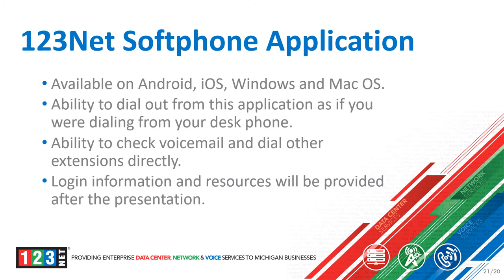123Net has a soft phone application you can download on your cell phone or computer. It's available on Android, iOS, macOS, and Windows. With this application, you have the ability to dial out as you would from your desk phone, displaying your work telephone number rather than your personal number. From this application, you can check your voicemail, dial other extensions or phone numbers, and add favorites and quick contacts. Login information and resources will be provided to your IT administrator at the end of this presentation.